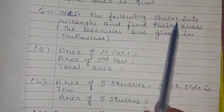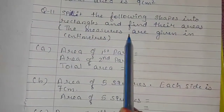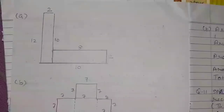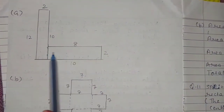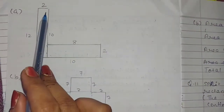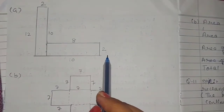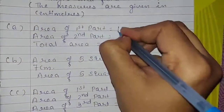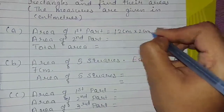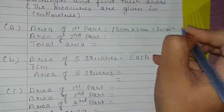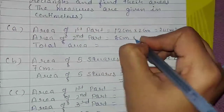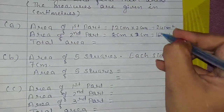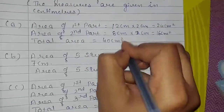Question number 11. Split the following shapes into rectangles and find their areas. The measures are given in centimeters. The first shape is an L shape; we have split it into 2 rectangles: 12 by 2 plus 8 by 2. Area of first part equals 12 cm multiplied by 2 cm, which equals 24 cm square. Area of the second part is 8 cm multiplied by 2 cm, equals 16 cm square. Total area is 40 cm square.